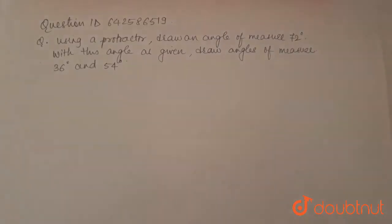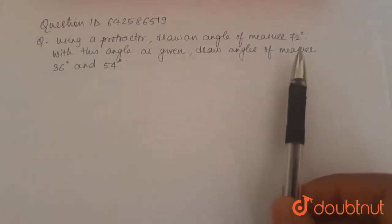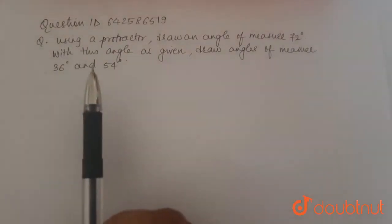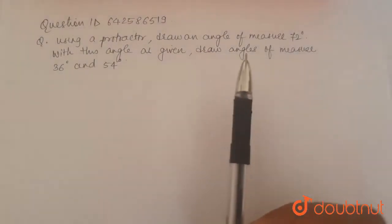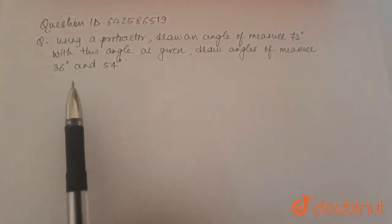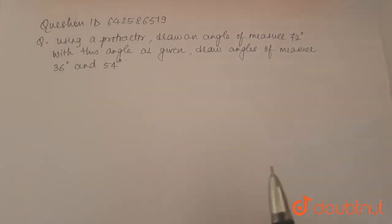The question is, using a protractor, draw an angle of measure 72 degrees. And with this angle as given, draw angles of measure 36 degrees and 54 degrees.